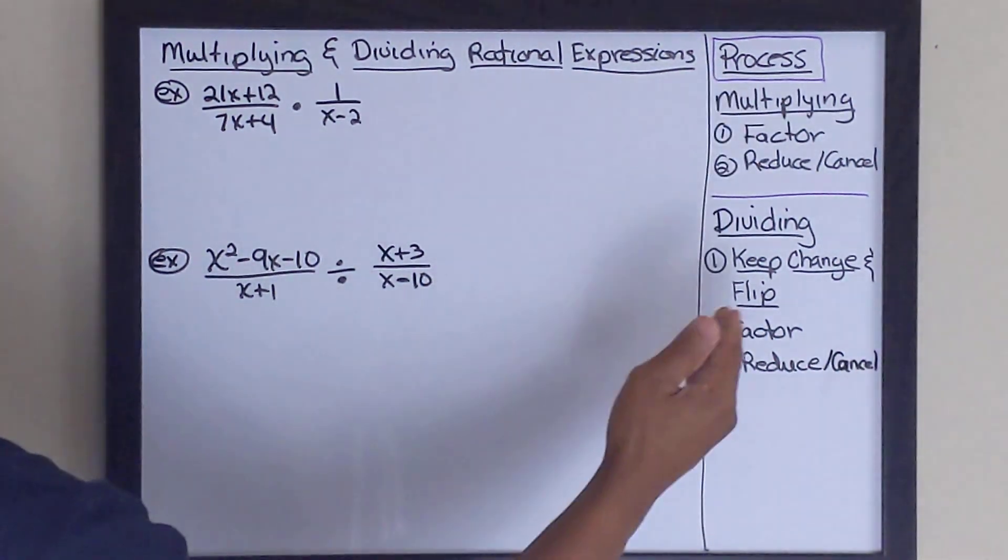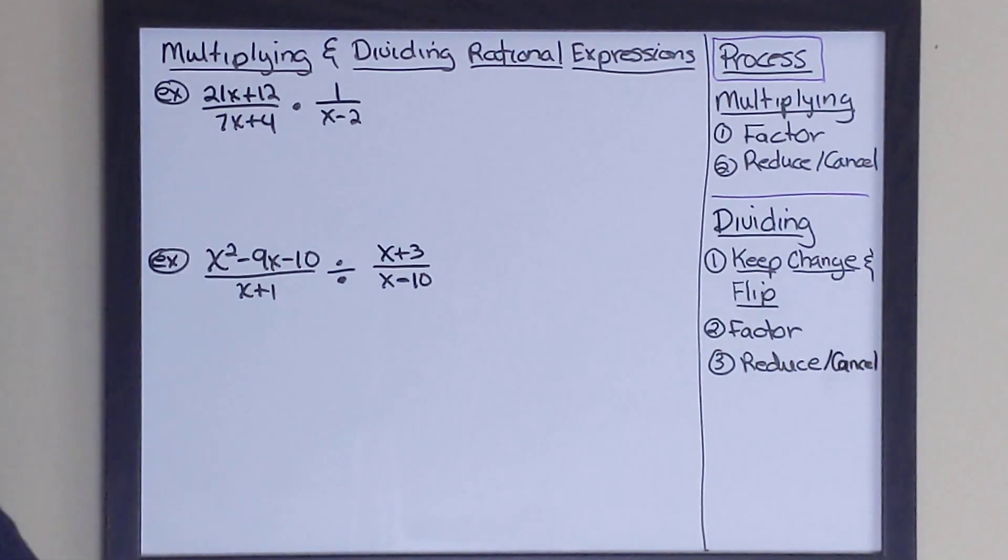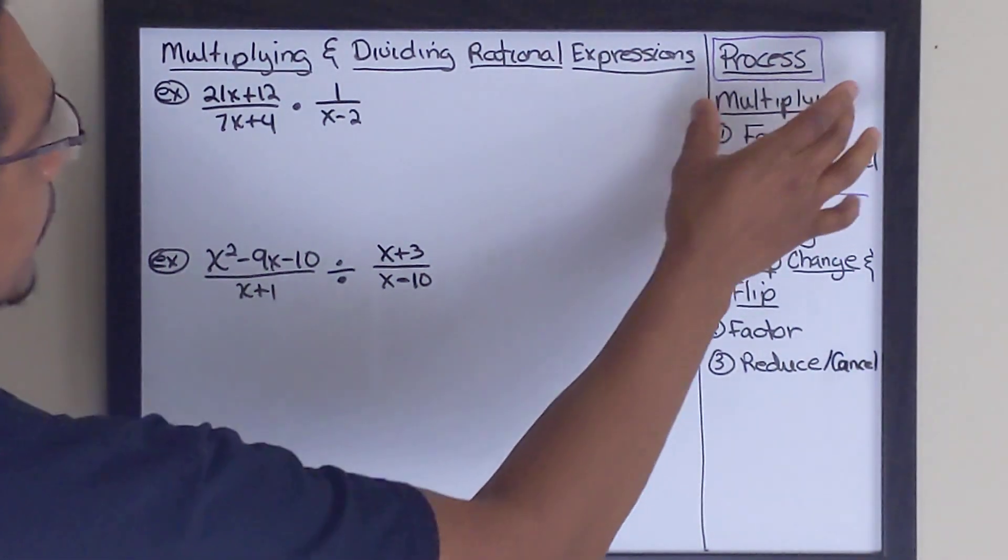If we look on the right, this is the process in which we're going to solve a particular problem. For multiplying, there are two rules you might want to remember.